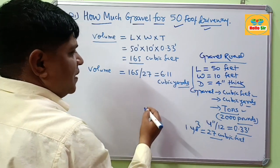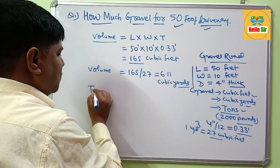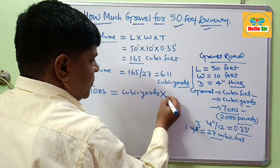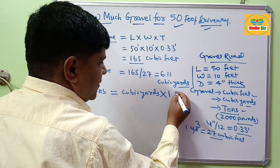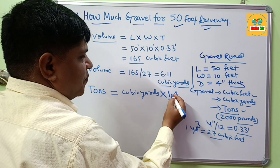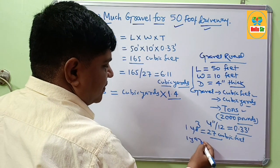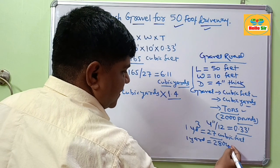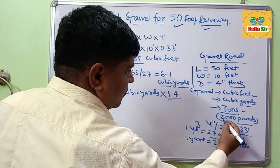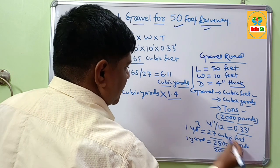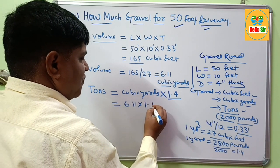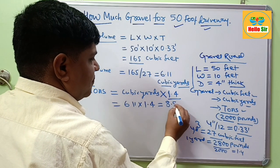If you want to convert cubic yards to tons, multiply the cubic yards by a factor of 1.4. This is because one cubic yard of gravel weighs about 2800 pounds, and dividing by 2000 gives the factor 1.4. So 6.11 cubic yards multiplied by 1.4 gives about 8.5 tons.